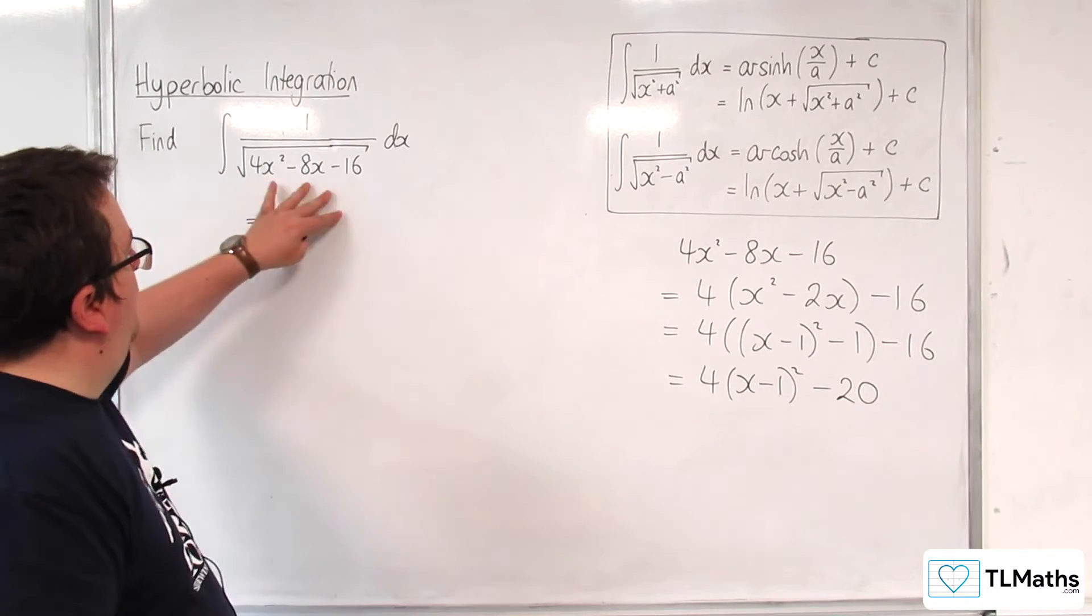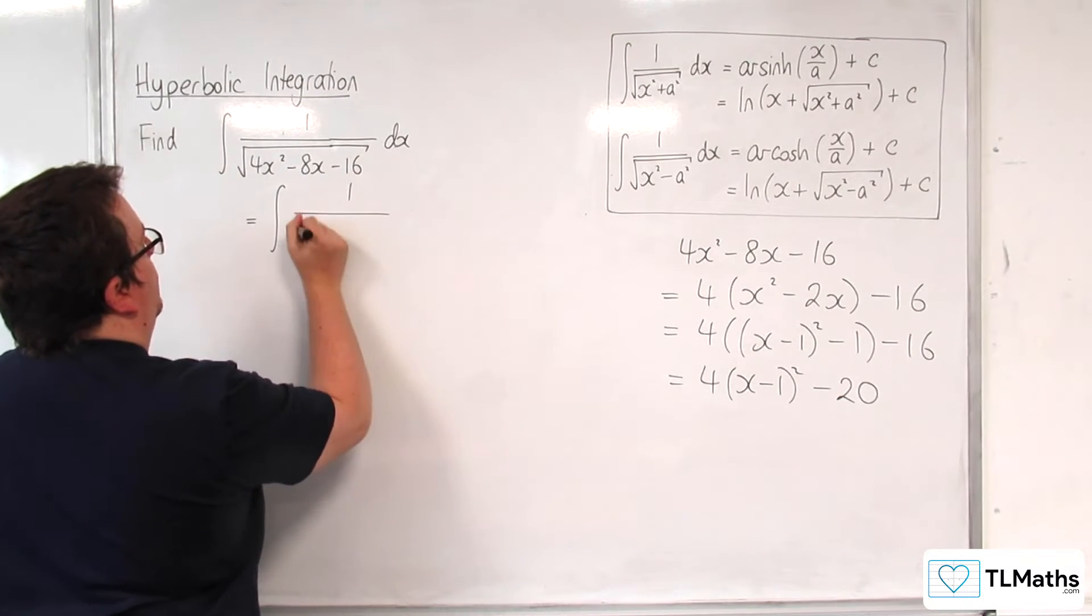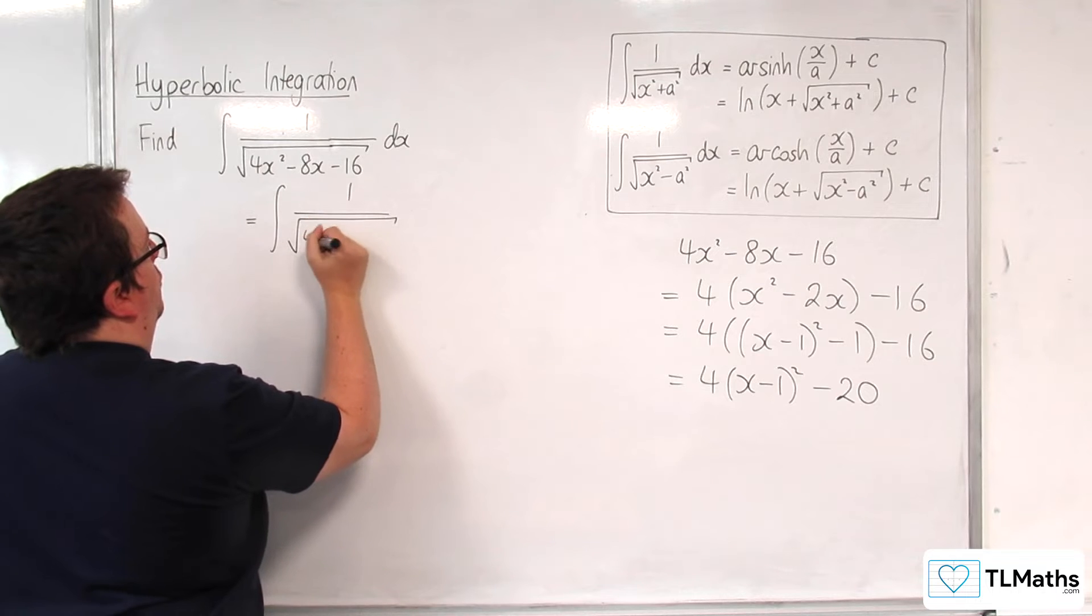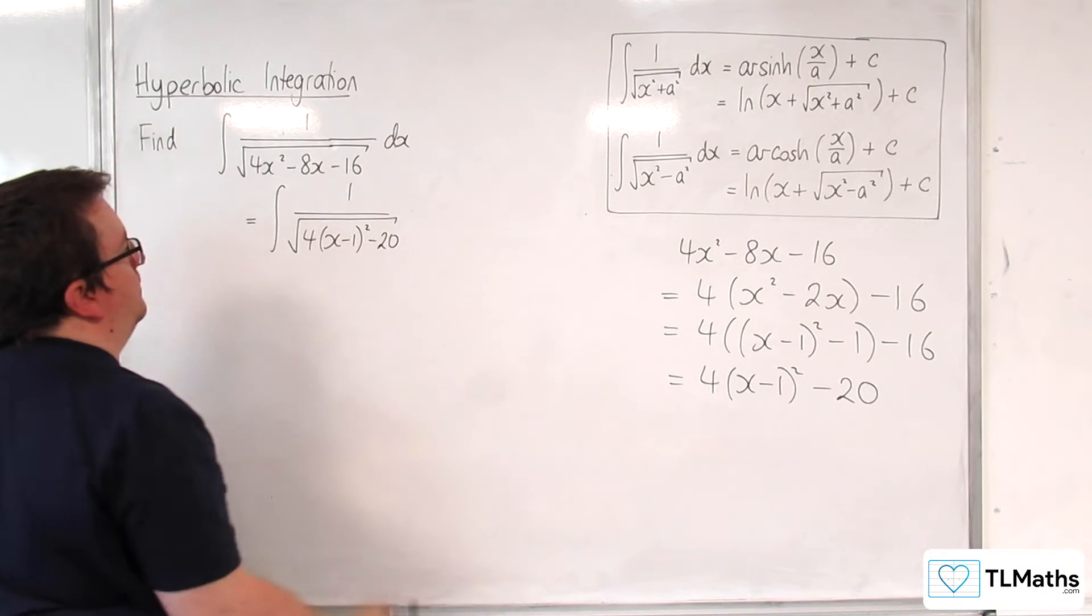So, in the format that we're going to get here, we've got the integral of 1 over the square root of 4 lots of x take away 1 squared, take away 20 dx.